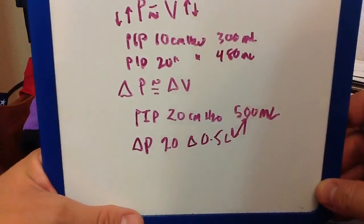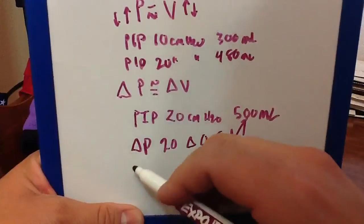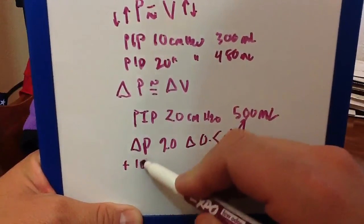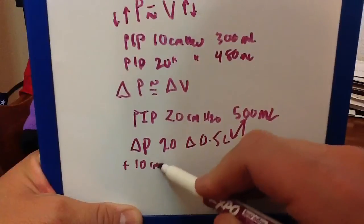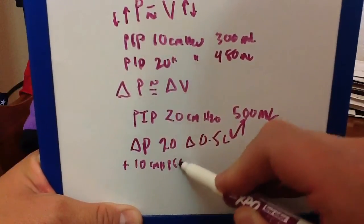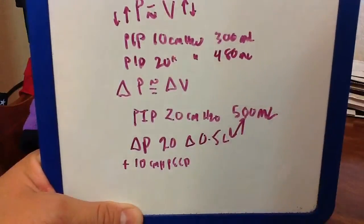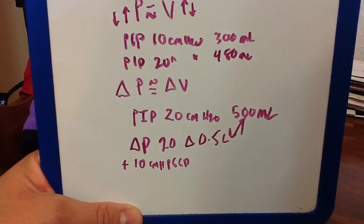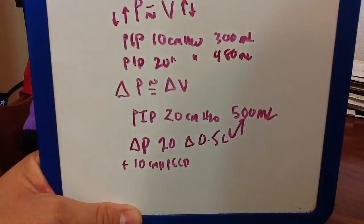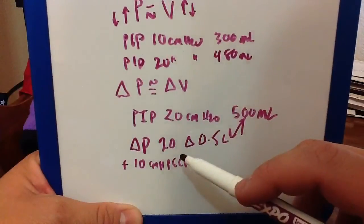Now let's go ahead and add 10 of PEEP, so plus 10 centimeters of water of PEEP. How would this cause my volume to go down, or could it cause my volume to go down? Let's think about this. What is my delta P, my change in pressure?